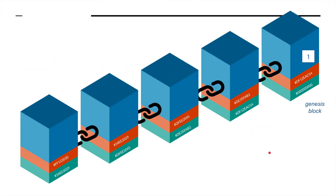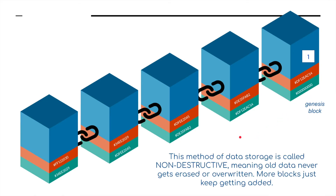This transaction block is then added to the existing blockchain, and all the corresponding numbers relate to the previous blocks. The first block in a blockchain is known as the Genesis block, and of course that won't have a previous number. This method of data storage is called non-destructive, meaning all data never gets erased or overwritten — more blocks just keep getting added to the blockchain.